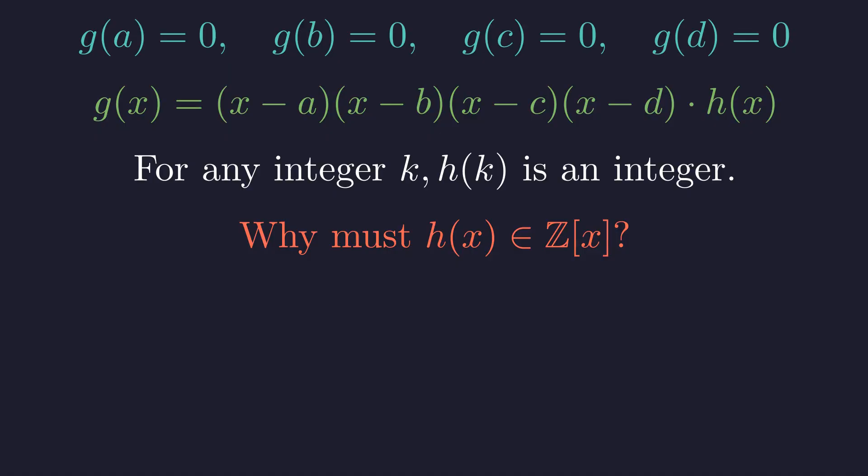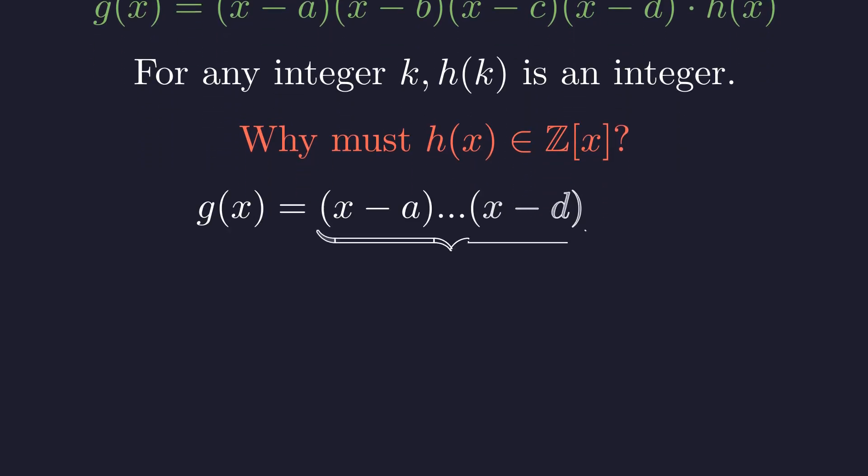You might be thinking, wait a minute. Why couldn't it have, say, fractional coefficients that somehow still give integer outputs for integer inputs? This is where some deeper algebra comes in. There's a classical result, related to something called Gauss's content lemma, that says when you divide one monic integer polynomial by another, the quotient must also have integer coefficients. So h really does have to be an integer polynomial.